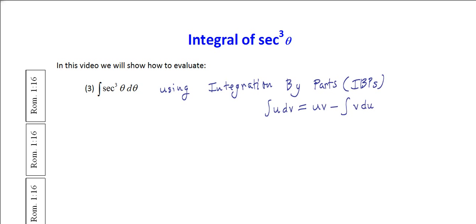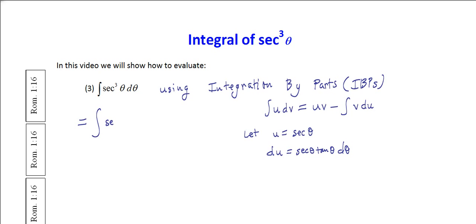In this particular instance we're going to let u be secant of theta. We already know what the derivative of secant is — we covered that in the first of these videos. So let's write this integral as secant of theta times secant squared of theta d theta.